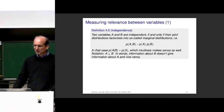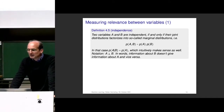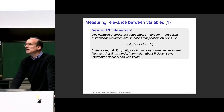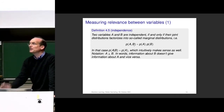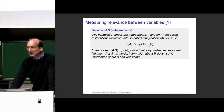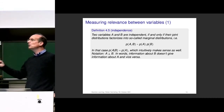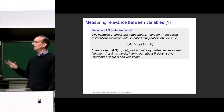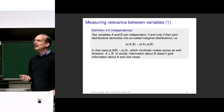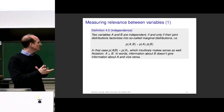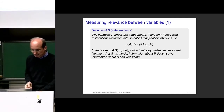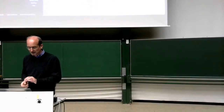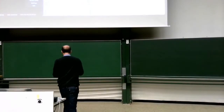If we do parameter counting, it's interesting: P(A, B) for binary variables has three parameters — four possibilities minus one. On the right-hand side, suddenly we only have two parameters, which is kind of interesting. We can also talk about it more geometrically. Let's try to draw it — so now we should see the boards.